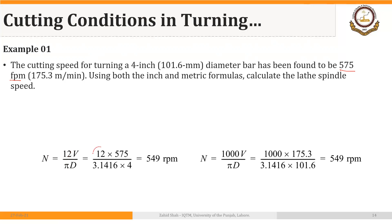We multiply by 12 to convert the diameter in inches into feet. This gives an RPM of 549. The metric formula is the same, multiplying by 1000 to convert the diameter in millimeters into meters. In both cases we get the same RPM of 549, and we can select a value close to this on the machine.